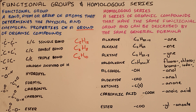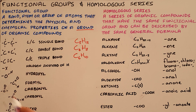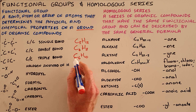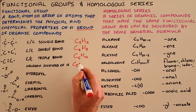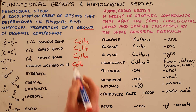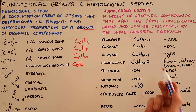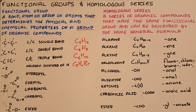Then we get haloalkanes, where one of the hydrogens is replaced by a halogen — the halogens being chlorine, bromine, and iodine. In that case, our general formula, if we took the original alkane, would be C5H11X, because one of the hydrogens has been replaced, where X represents any one of the halogens — in this example, bromine.